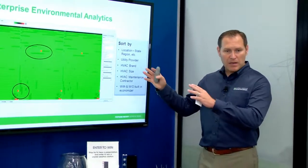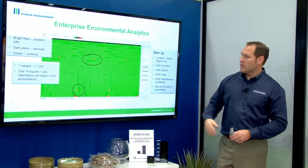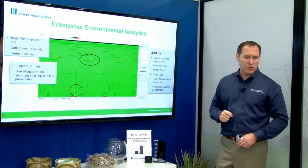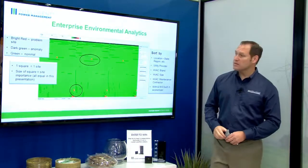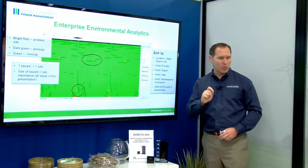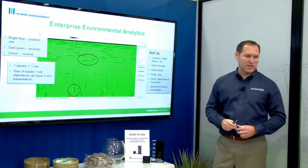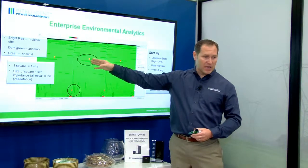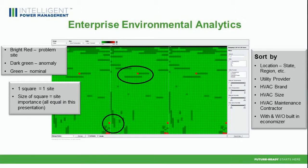We take that same data and roll it up into an enterprise level. This is 5,000 sites we're monitoring, and we're able to quickly pick out anomalies associated with these customer sites. Each block represents one site. Bright green means operating within nominal parameters; dark green indicates an anomaly associated with that site; and red means there's actually a problem with that site. All we have to do is highlight over a red site, drill down into the data, and identify exactly what's wrong with some margin of error. From that, we can automatically issue a trouble ticket or contact the vendor responsible for that particular site.